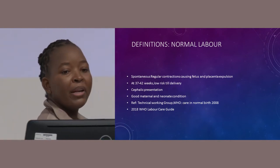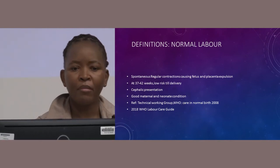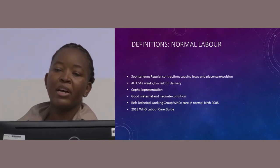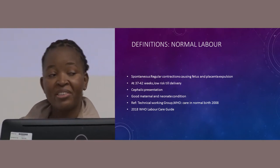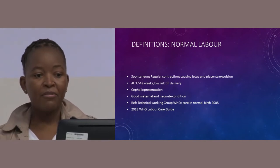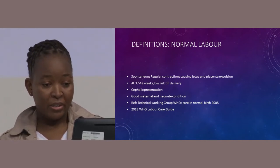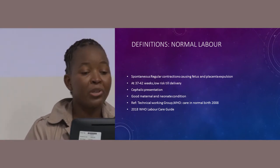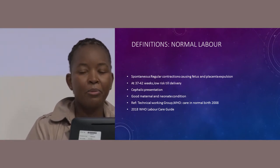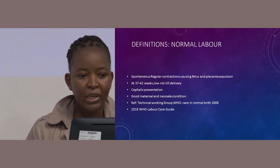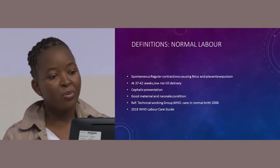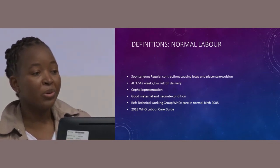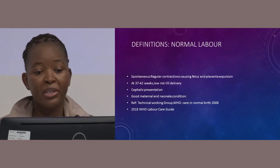What is normal labor? The WHO Technical Working Group defines normal labor as spontaneous regular contractions causing fetus and placental expulsion. This occurs at 37 to 42 weeks and it remains at low risk throughout. The fetus has to be in cephalic presentation, and at the end, there has to be good maternal and neonatal condition.